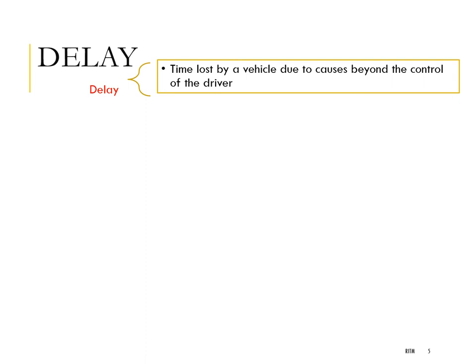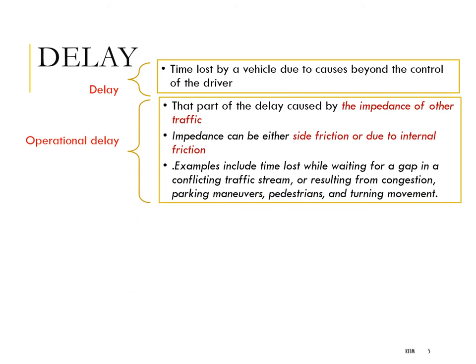Delay is generally defined as time loss by the vehicle due to causes beyond the control of the driver. There are various forms of delay. First is operational delay — delay caused by the impedance of other traffic, either internal frictions within the traffic stream or external side frictions. Examples include congestion delays, parking maneuvers, pedestrian crossings, waiting on a minor road for an adequate gap to merge onto a major road. These are all operational delays.